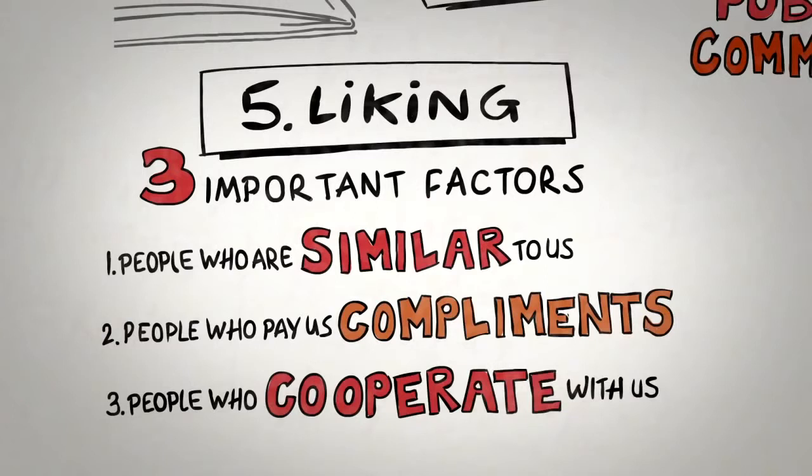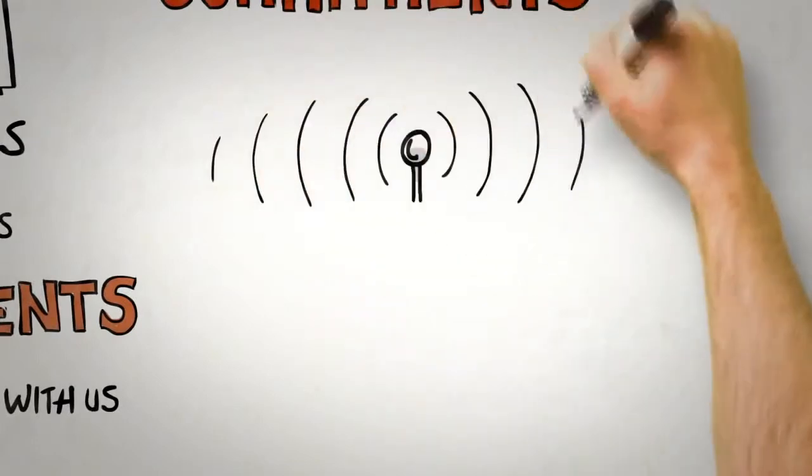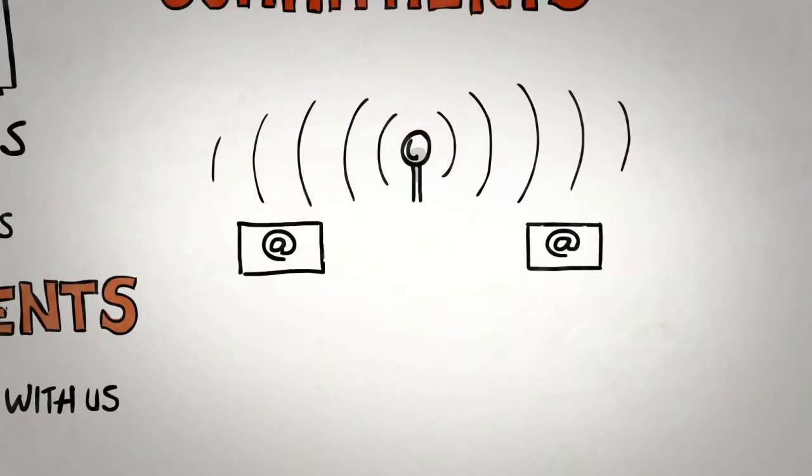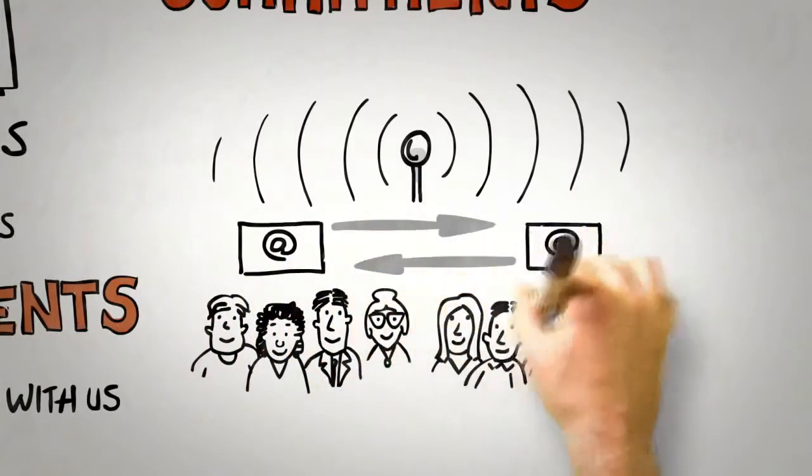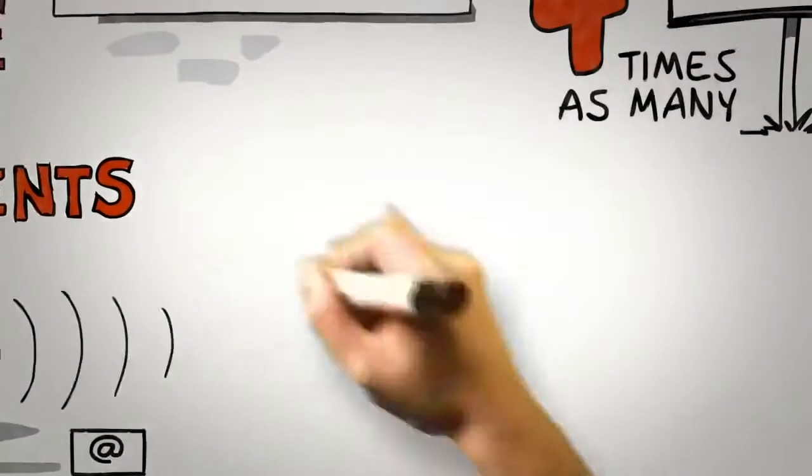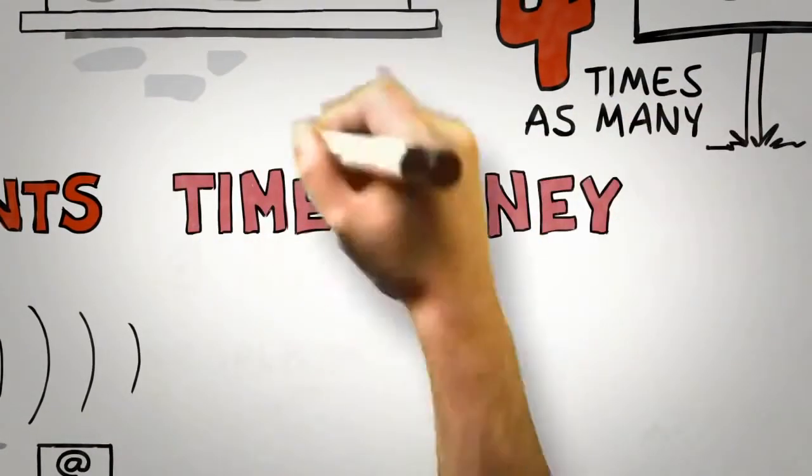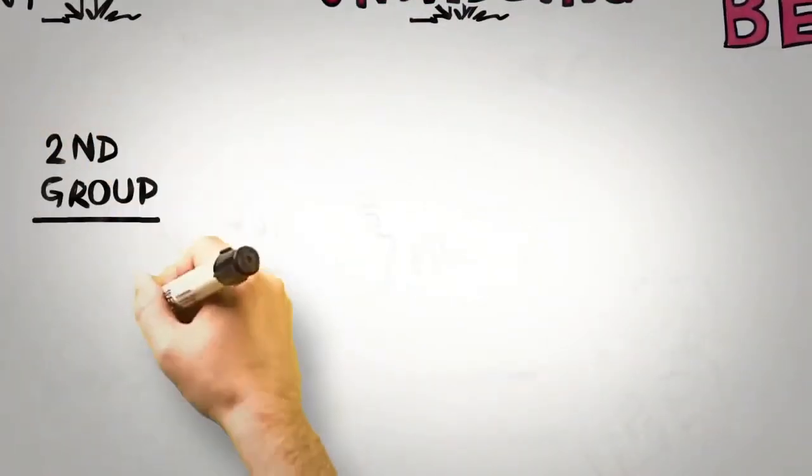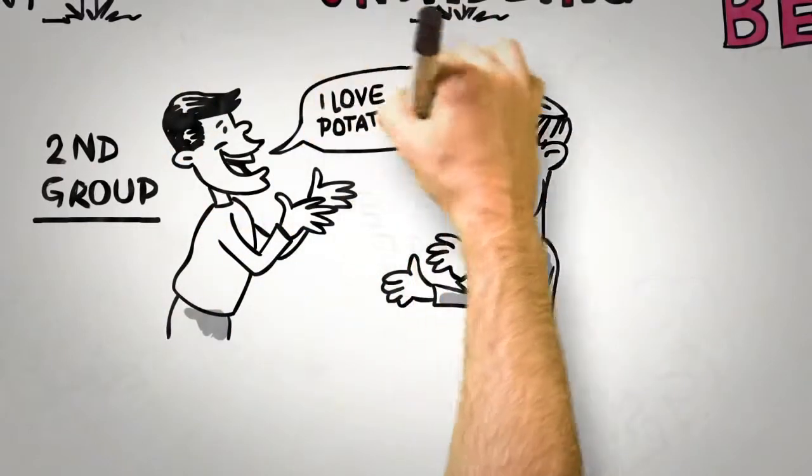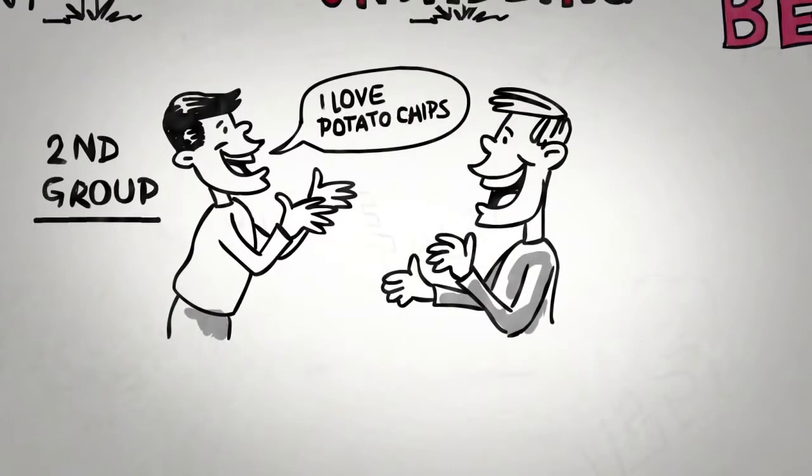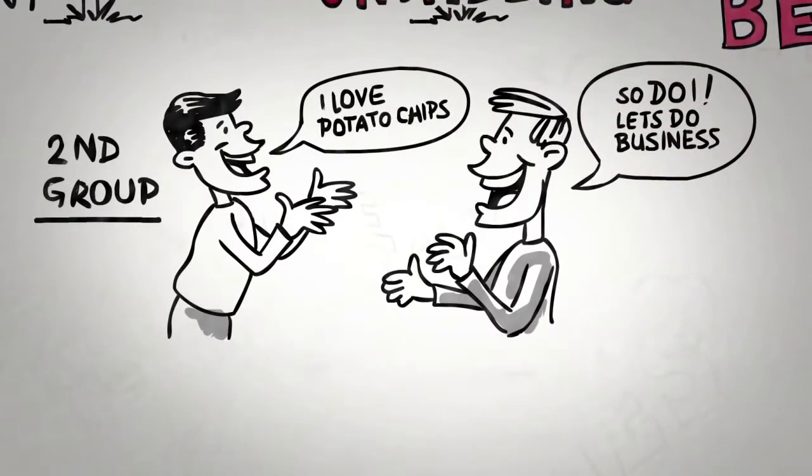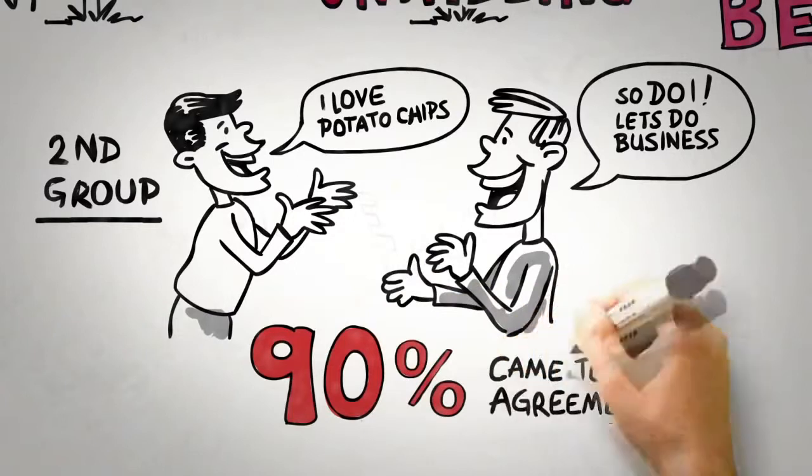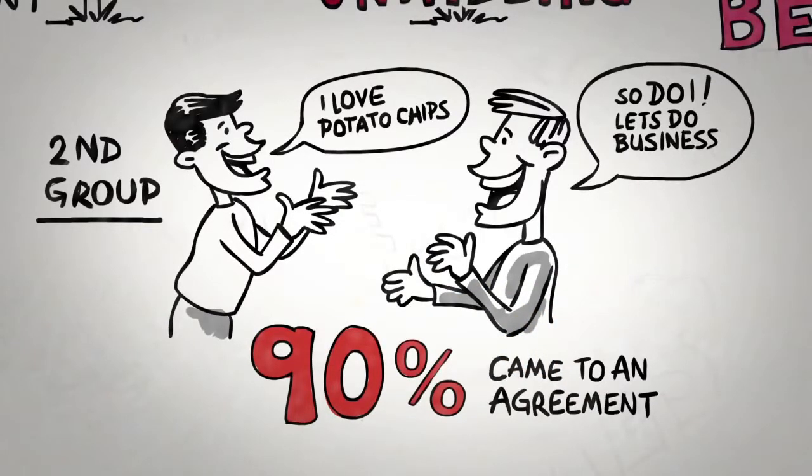As more and more of the interactions that we are having take place online, it might be worth asking whether these factors can be employed effectively in online negotiations. In a series of negotiation studies carried out between MBA students at two well-known business schools, some groups were told, 'time is money, get straight down to business.' In this group, around 55% were able to come to an agreement. A second group, however, were told, 'before you begin negotiating, exchange some personal information with each other. Identify a similarity you share in common, then begin negotiating.' In this group, 90% of them were able to come to successful and agreeable outcomes that were typically worth 18% more to both parties.